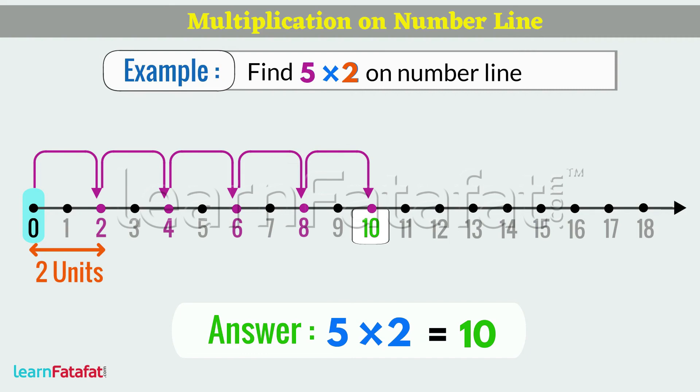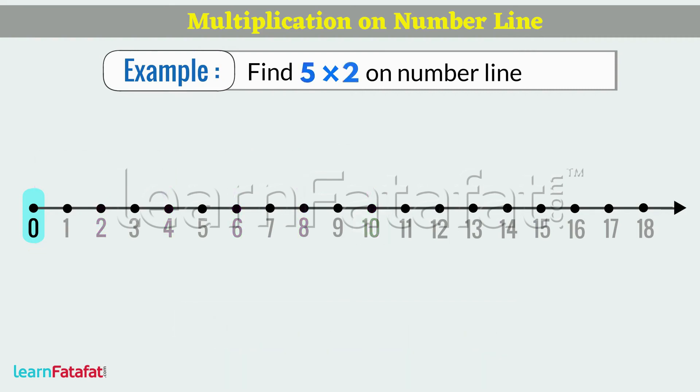We can also perform same multiplication by taking the jumps of 5 units each for 2 times.